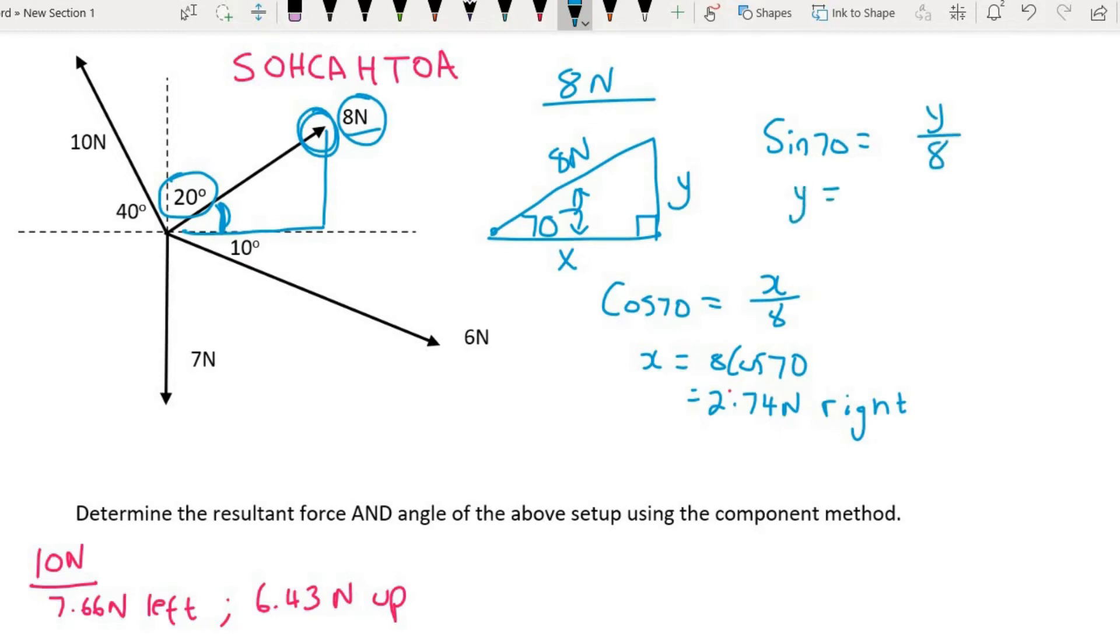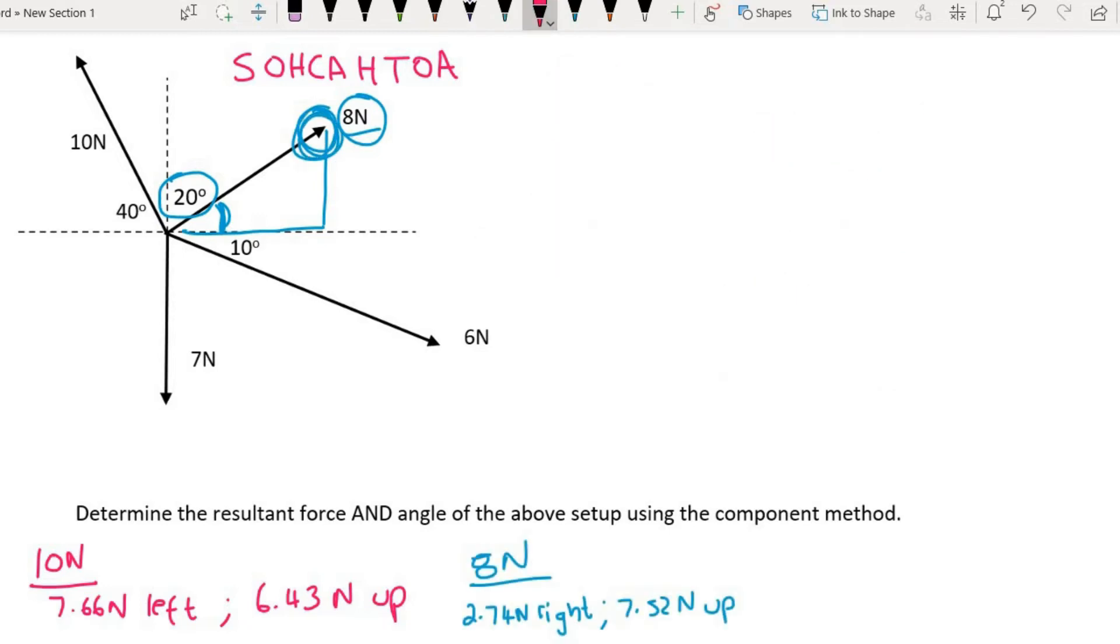We say sin 70 equals y over 8. You would get that y is equal to 8 sin 70 which equals 7.52 newtons. This arrow is pushing upwards. So I've summarized the 8 newton force at the bottom.